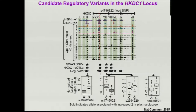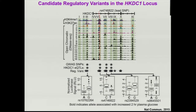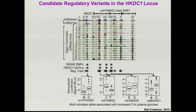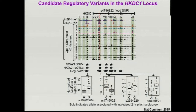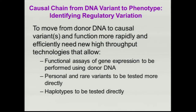Importantly, each of the bold SNPs associated with decreased gene expression was also associated with higher two-hour glucose levels in the mothers. This led to the hypothesis that lower HKDC1 expression may be associated with higher two-hour glucose levels, and we have some data in the mouse to suggest that might be true.